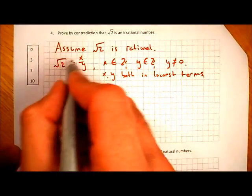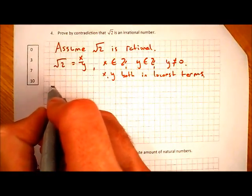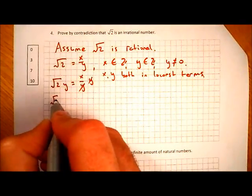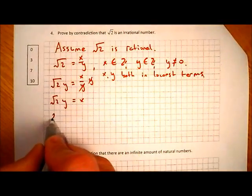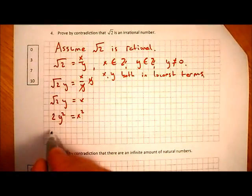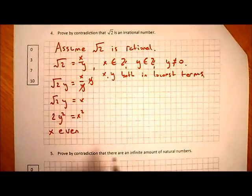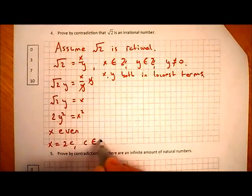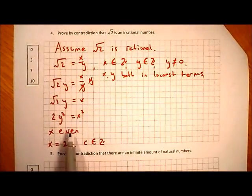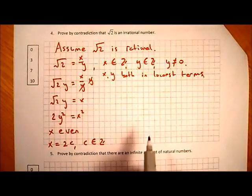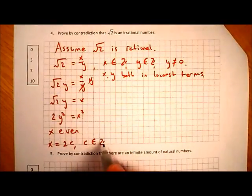If the square root of 2 equals X over Y, multiply both sides by Y to get √2·Y = X, then square both sides: 2Y² = X². This means X² is even, so X must be an even number. Any even number can be written as twice another integer, so let X equal 2C, where C is an integer. For example, 10 is twice 5, and 16 is twice 8.